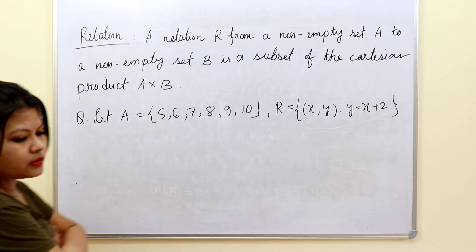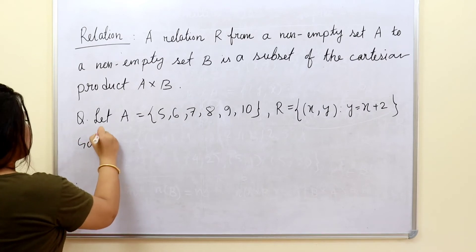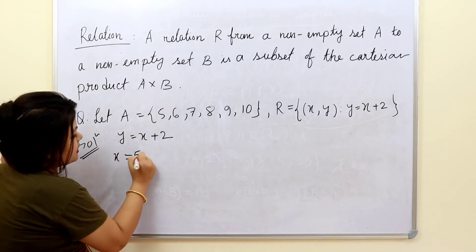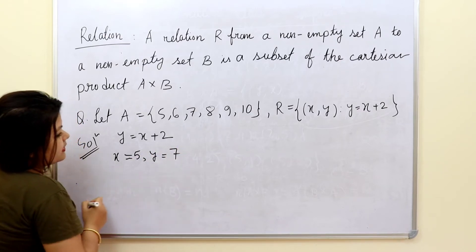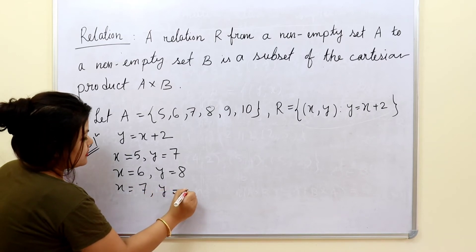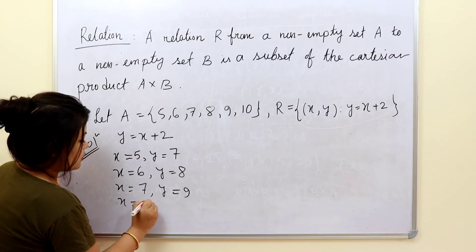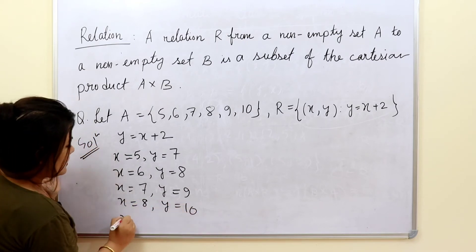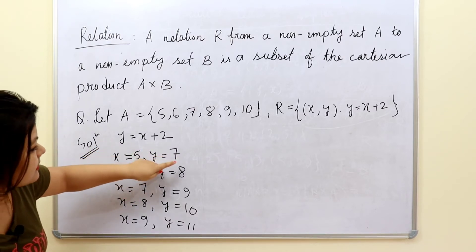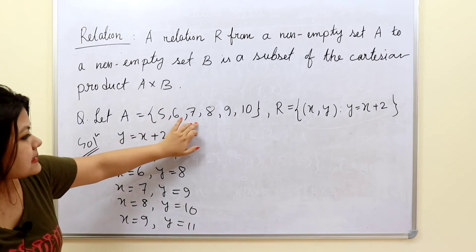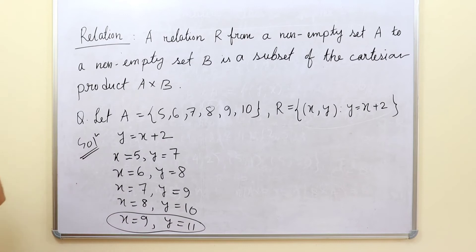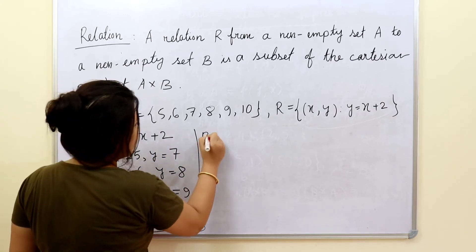Let us solve the question. If x = 5, then y = 7. If x = 6, y = 8. If x = 7, y = 9. If x = 9, y = 11. Now you can see that 5, 6, 7, 8, 9, 10 are all included in set A, but when x = 9, y = 11, which does not belong to set A. Therefore we cannot consider this pair. So R = {(5,7), (6,8), (7,9), (8,10)}.